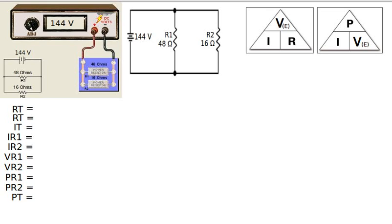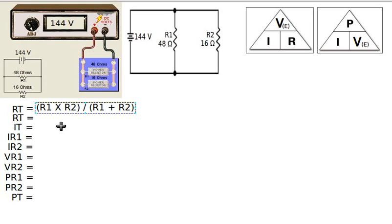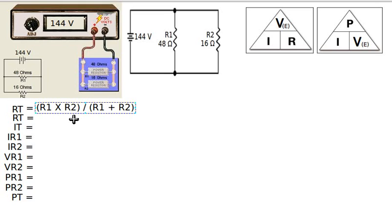Let's begin by finding the total resistance of this circuit. One formula we can use is called the product over sum formula: R1 times R2 divided by R1 plus R2. Notice that this formula has parentheses indicating that the multiplication and addition should be done before the division calculation.